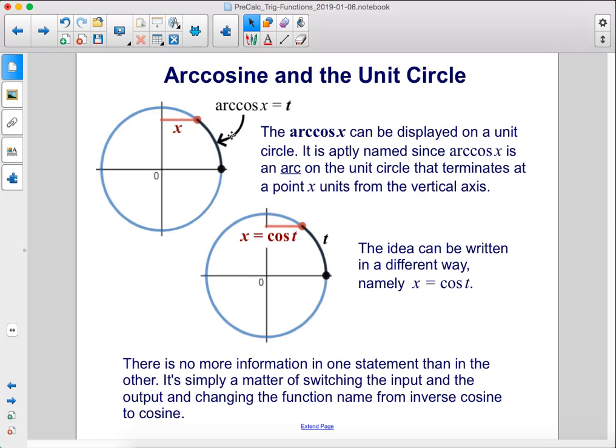The arc cosine x can be displayed on a unit circle. It is aptly named since arc cosine x is an arc on the unit circle that terminates at a point x units from the vertical axis. The idea can be written in a different way, namely x equals cosine t. There's no more information in one statement than in the other. It's simply a matter of switching the input and the output and changing the function name from inverse cosine to cosine.